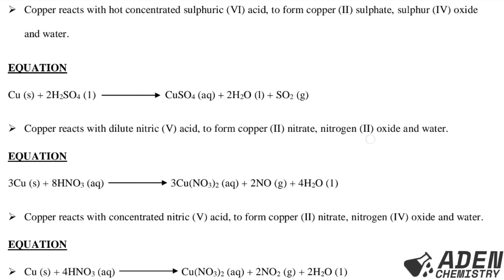Copper reacts with dilute nitric acid to form copper(II) nitrate, nitrogen(II) oxide, and water. The equation: 3Cu(s) + 8HNO₃(dilute, aq) → 3Cu(NO₃)₂(aq) + 2NO(g) + 4H₂O(l).